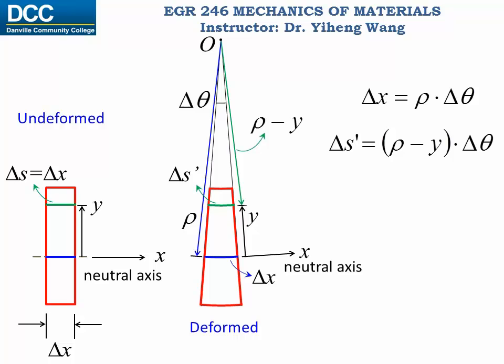Therefore at position y, the normal strain epsilon equals to the final length delta s prime minus the initial length delta x before deformation divided by the original length delta x before deformation. And since we know that delta x equals delta x, therefore the normal strain at y equals to delta s prime minus delta x divided by delta x.